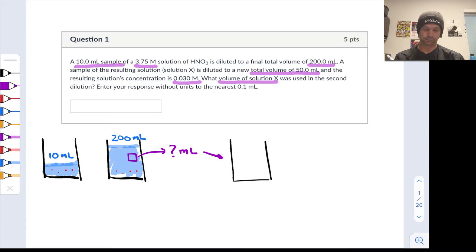Let's continue to represent that chunk of solution using a purple square and I'm gonna throw a red dot in there to remind ourselves that that is a nitric acid solution. That's diluted to a total volume of 50 milliliters.